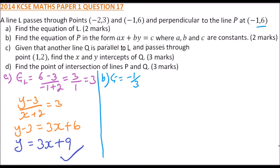To get the equation we use the point minus 1, 6. So we say y minus 6 divided by x minus minus 1, that becomes positive, equals minus a third. Cross multiply to get y equals minus a third x plus something.